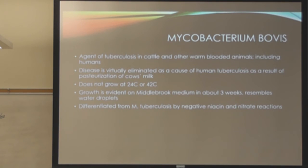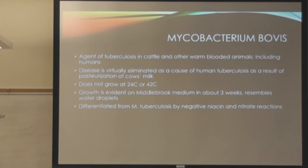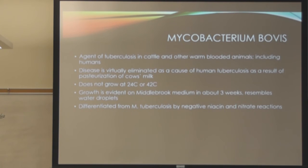M. bovis causes TB usually in cattle, but humans can get it as well. Bovis grows at 35 to 37 degrees, does not grow at 24 or 42. It needs 6 to 8 weeks to grow and is cultured on Lowenstein-Jensen or Middlebrook media. It can look like water droplets — a key way to identify it as possibly bovis. It's differentiated from tuberculosis by having a negative reaction where tuberculosis would be positive.